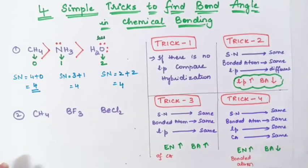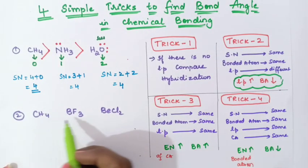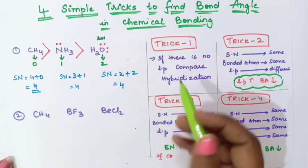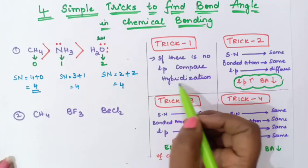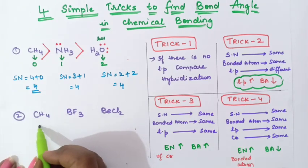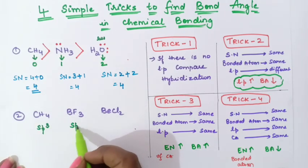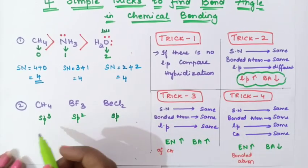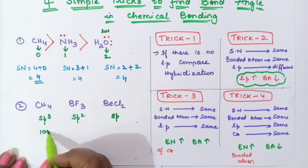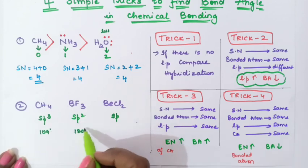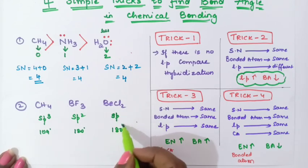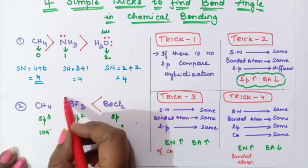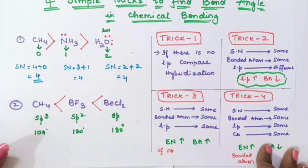Second example: CH₄, BF₃, and BeCl₂. In these molecules no lone pairs are present, so we use Trick 1 and compare hybridization. CH₄ has SP³ hybridization giving a bond angle of 109°; BF₃ has SP² hybridization giving 120°; BeCl₂ has SP hybridization giving 180°. So the order of bond angle is: BeCl₂ > BF₃ > CH₄.